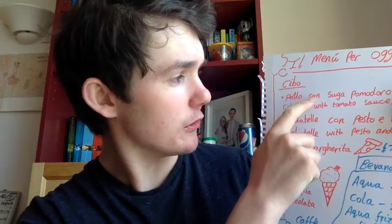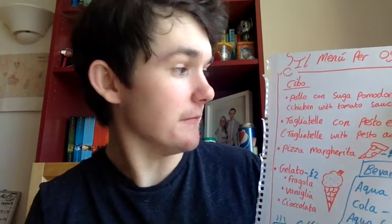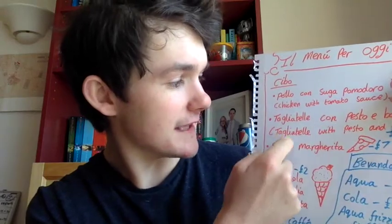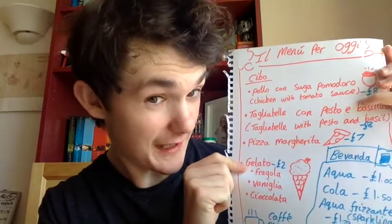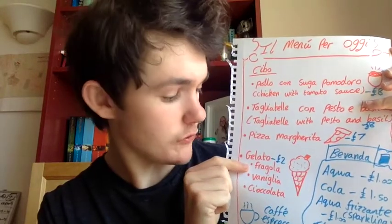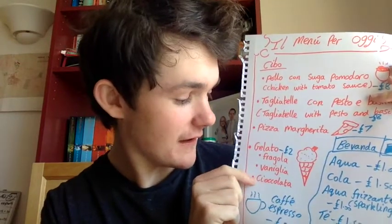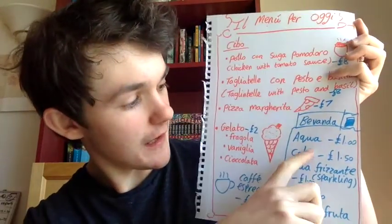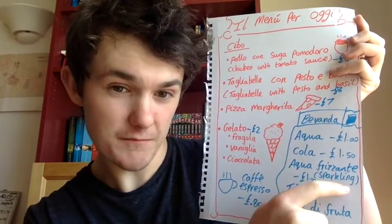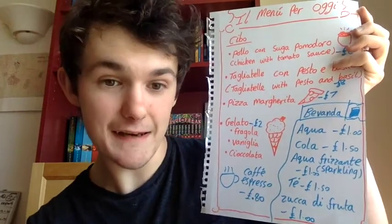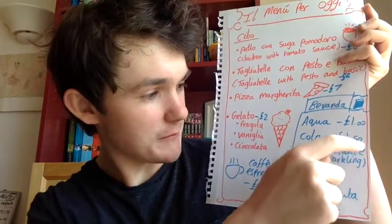Pollo — and I'm hoping a lot of you know what that is. 'Pollo con sugo pomodoro' — that means chicken with tomato sauce. 'Tagliatelle', which in English is tagliatelle, 'con pesto e basilico' — tagliatelle with pesto and basil. And then a classic pizza margherita — that does not need any translation. For gelato: 'fragola' or strawberry, vanilla, and 'cioccolata', which is chocolate. For drinks: 'l'acqua' — water, Cola — Coca-Cola, 'l'acqua frizzante' or fizzy sparkling water, 'tè' which is tea, 'succo di frutta' which is fruit juice, and 'caffè espresso'. And then we've got quite reasonable prices next to them as well.